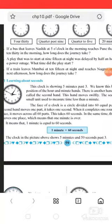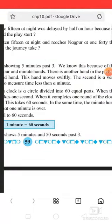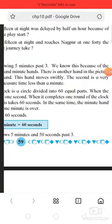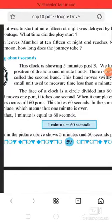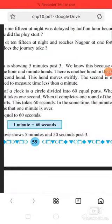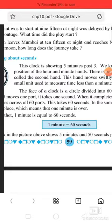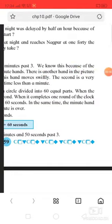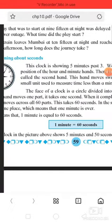Learning about seconds. This clock is showing 5 minutes past 3. We know this because of the position of the hour and minute's hand. In this clock, it's shown the time 5 minutes past 3. We can know the answer because the position is perfect. That's why we know the answer.